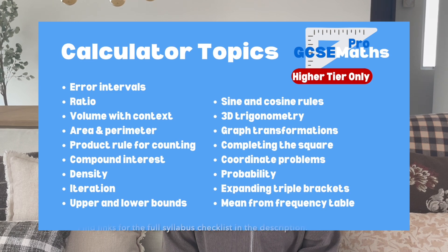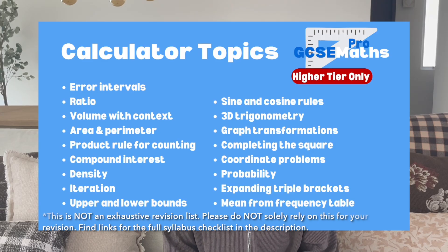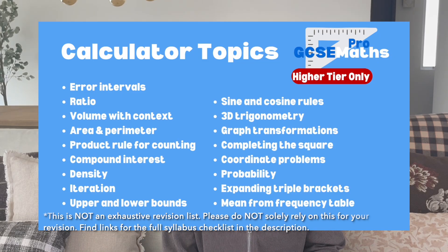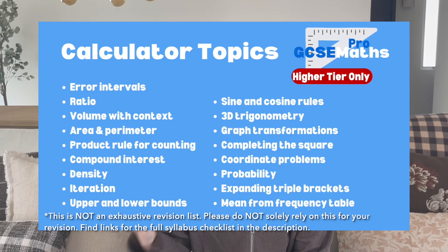Some key topics to note: error intervals are really short questions and really easy to get marks. Compound interest comes up a lot, but also consider that it could be in the context of depreciation or something decreasing — maybe a tap that's leaking, or a car losing value over some period of years or months. That's also to do with compounding.